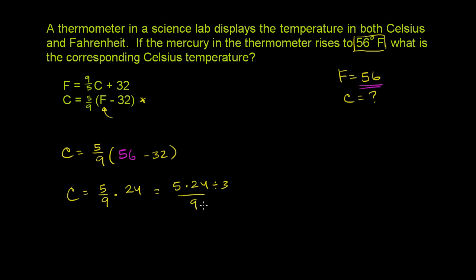If we divide the numerator by 3 and the denominator, we're not changing the value. 24 divided by 3 is 8. 9 divided by 3 is 3. So it becomes 5 times 8, which is 40, over 3 degrees. And if we want to write this as a number that makes a little bit more sense in terms of temperature, let's divide 3 into 40 to get the number of degrees.